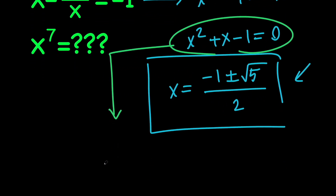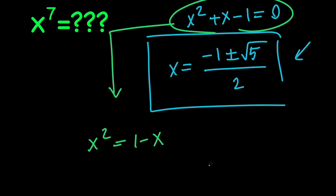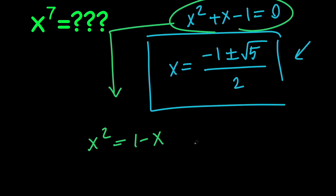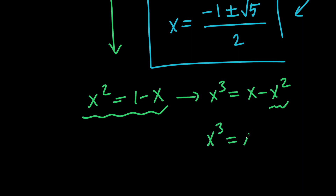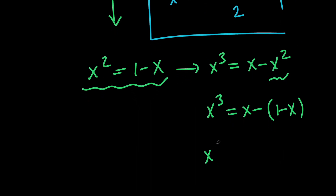We can say that x squared equals 1 minus x. Then, to find x cubed, let's go ahead and multiply everything by x to get x cubed equals x minus x squared. Since we want to get rid of x squared on the right-hand side, we replace it with 1 minus x. So, x cubed equals x minus (1 minus x), which means that x cubed equals 2x minus 1.